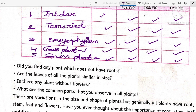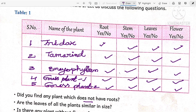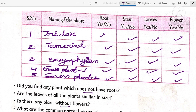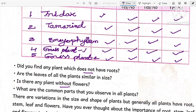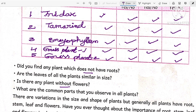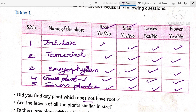Do you find any plant which does not have roots? No — all the plants contain roots. Are all the leaves of all the plants similar in size? No, because tridax leaves are different from tamarind leaves, tamarind leaves are different from bryophyllum, and grass leaves are different from these plants. Is there any plant without flowers? No — each and every plant has flowers. In this video some plants did not show flowers, but when they grow to a certain extent they will give flowers.